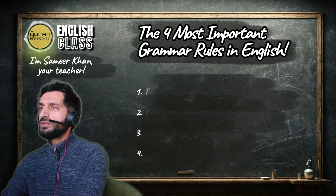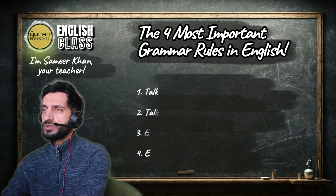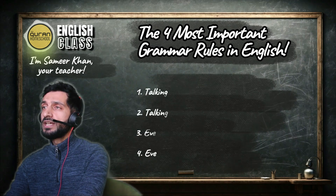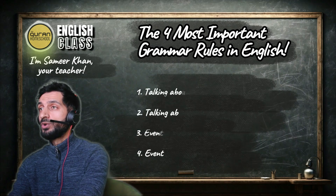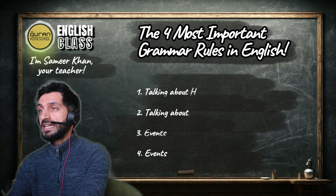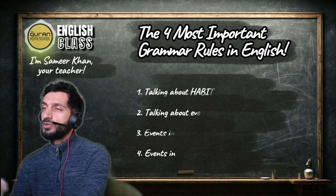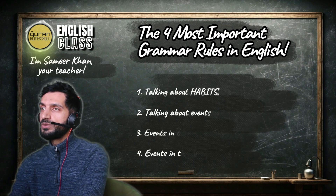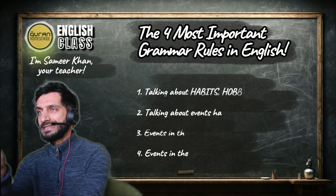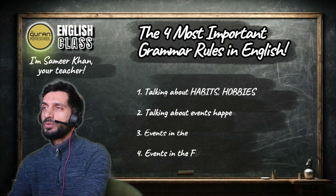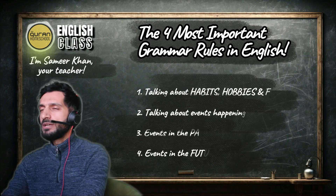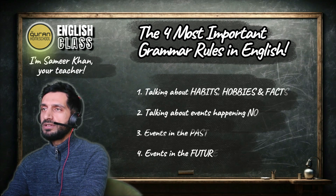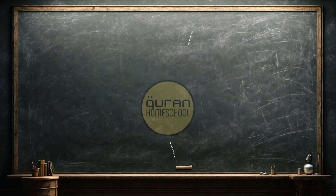The most important things you need to know in English: if you can learn these four verb tenses, if you can learn how to make sentences in these four ways, you will be able to talk about anything.